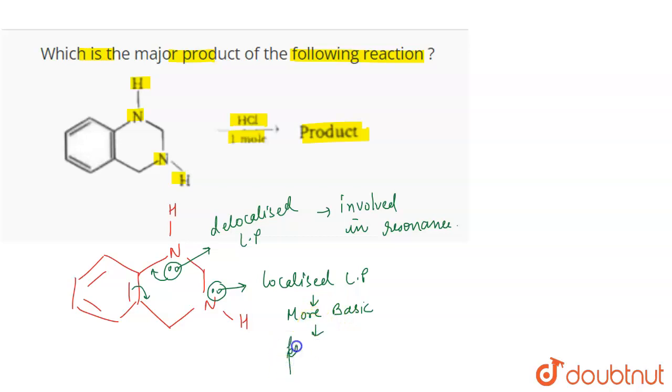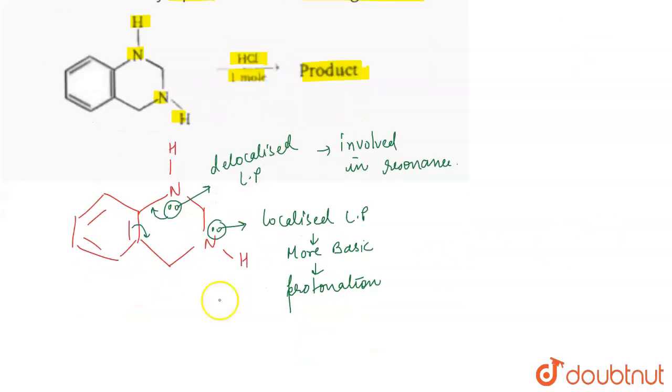So the protonation will take place at this nitrogen. When one mole of HCl will be added, protonation is going to take place at this nitrogen.